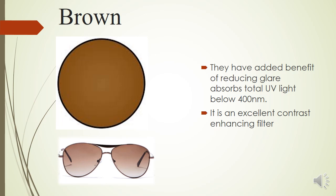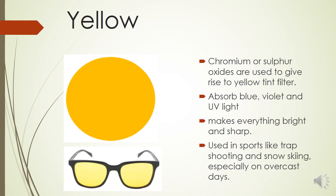The brown tint is another very common tint. It has the added benefit of reducing glare and absorbing UV light below 400 nanometers. It has excellent contrast-enhancing properties, making it useful both as a contrast-enhancing filter and for UV protection.